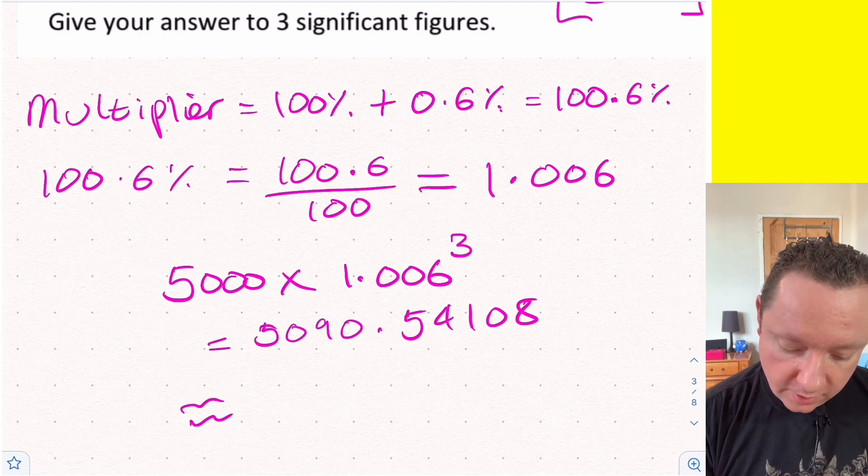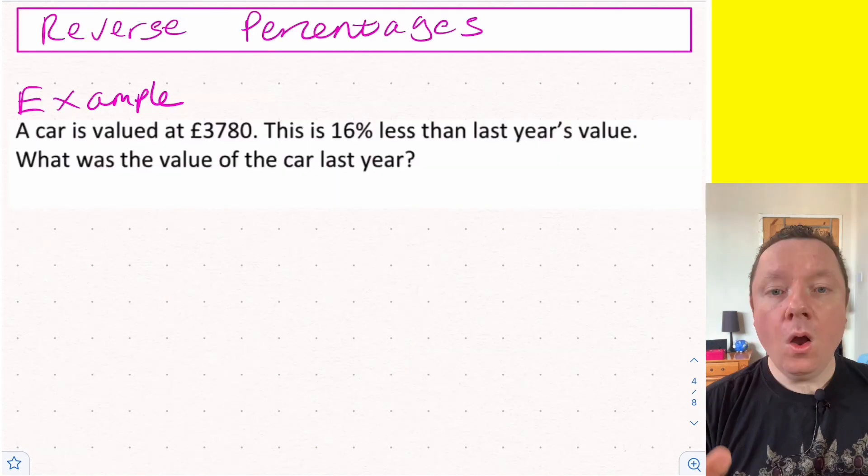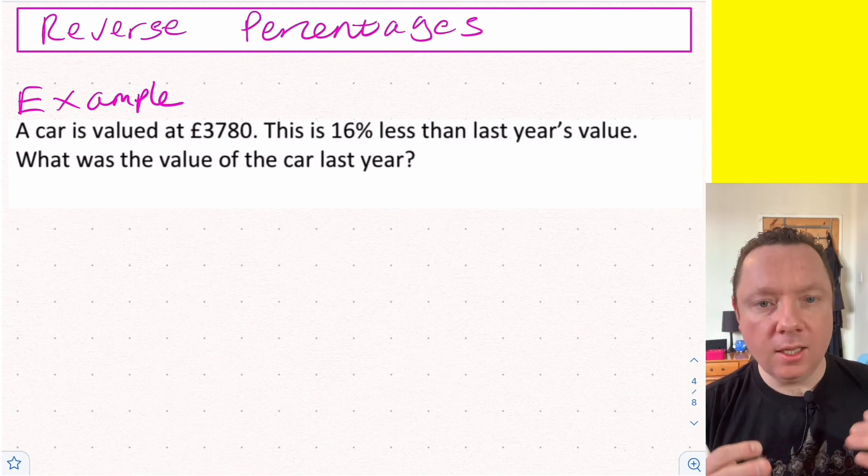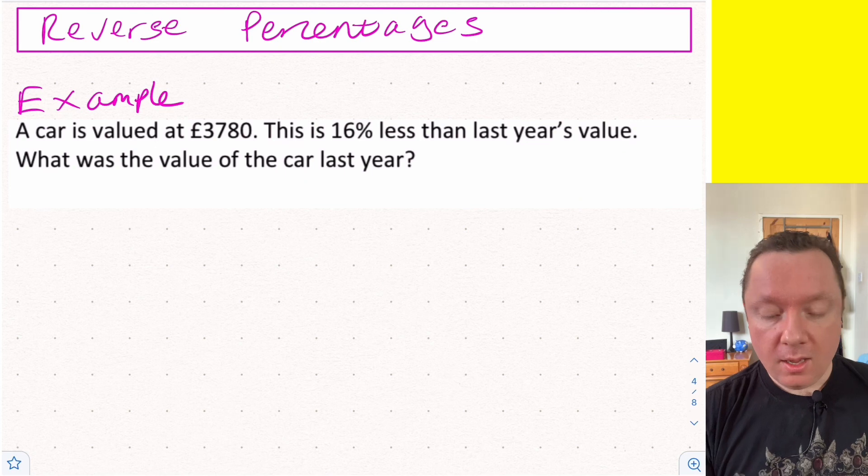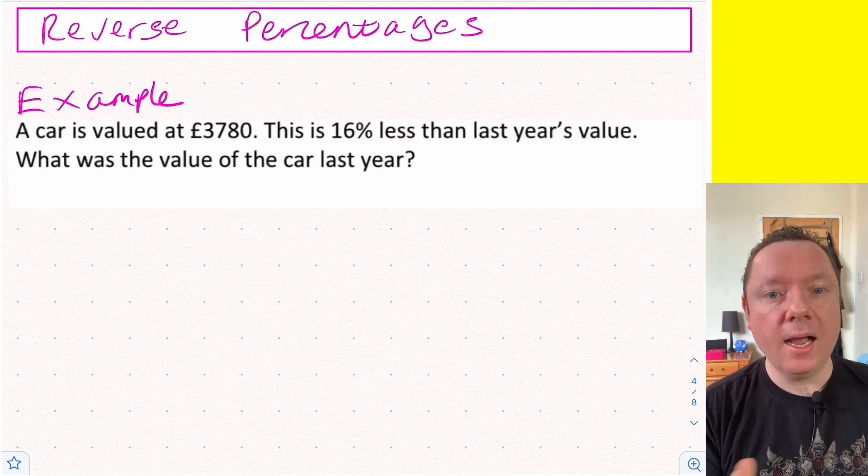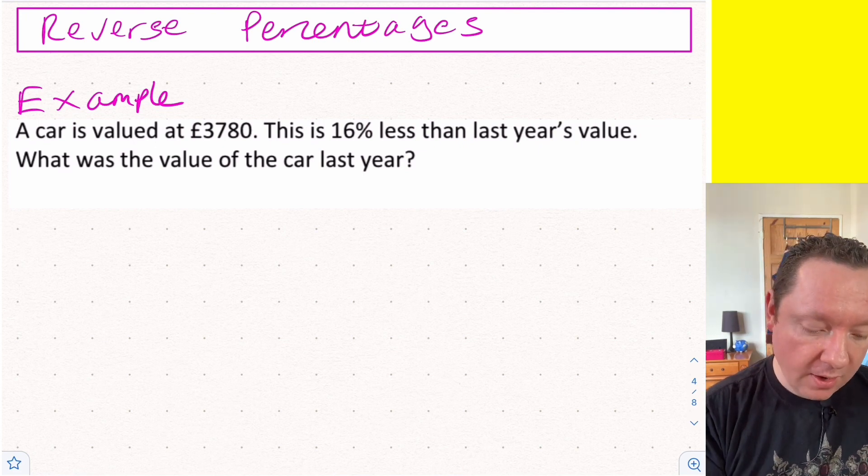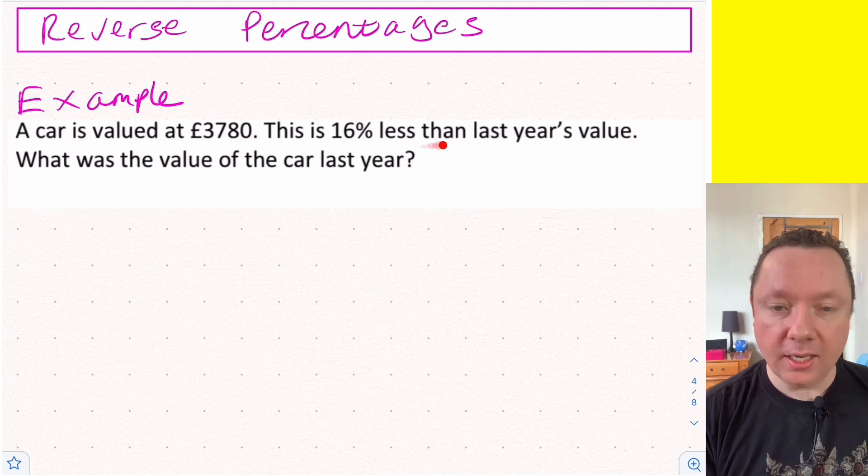Okay, reverse percentages. At National 5 in the calculator paper there's generally two types of percentages questions - the one we just did where there was a time frame and we multiplied by the multiplier to a certain power. The other one is where there's no time given at all in the question and you're working backwards to find the answer.